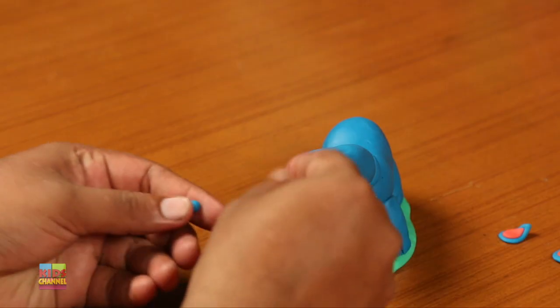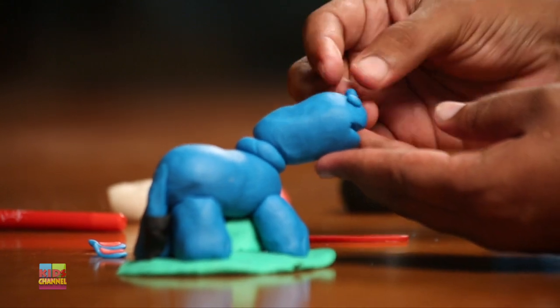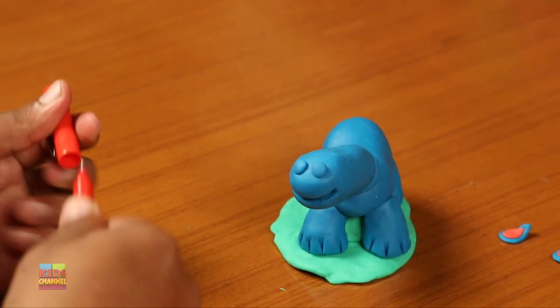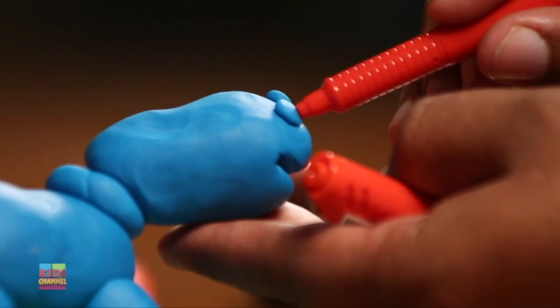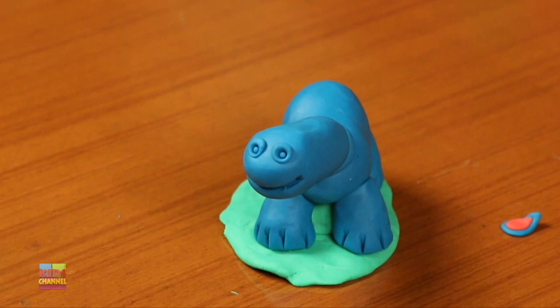All right, we're almost done. Now take those small blue play-doh balls and attach it to the face. Use the pen, push in, and those are going to be the nostrils.